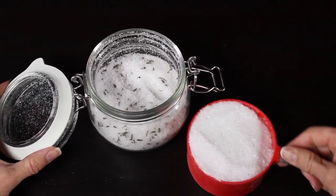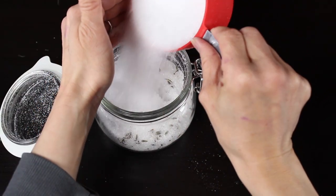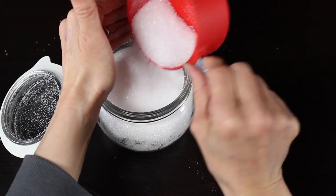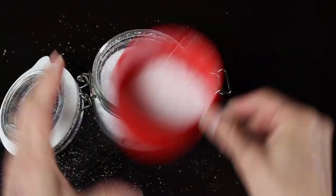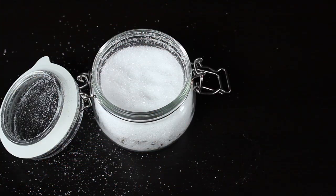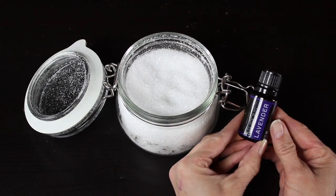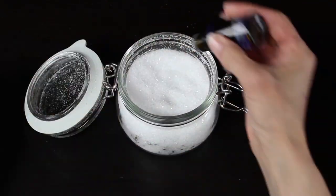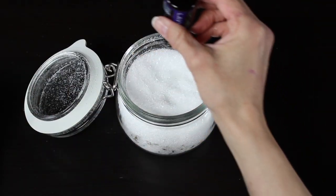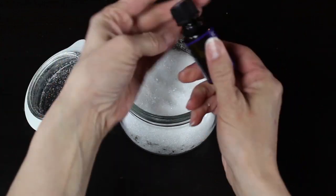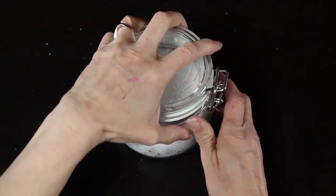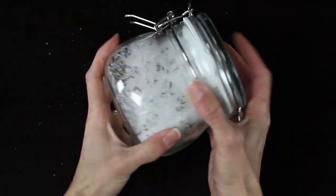Doesn't it look so beautiful? And then you're going to take your measuring cup and dump in enough of your Epsom salts to fill the container. Mine ended up using another almost cup of the Epsom salts. So total I had two cups of Epsom salts. And then I'm going to put another five to ten drops of my lavender oil in the top. And you guessed it, give it another good shake.